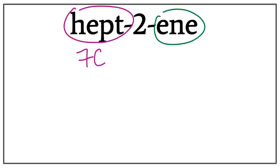Ene here tells us that this is an alkene, meaning that there is a double bond between carbon.